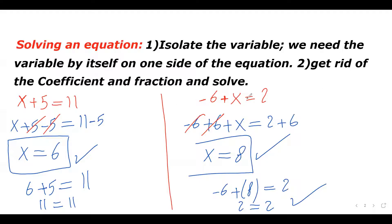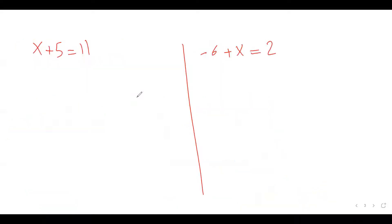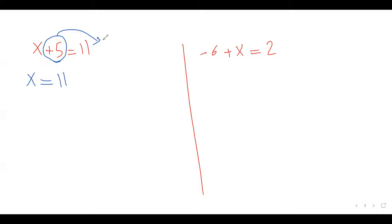There's another method which is a little faster. Whenever we move something from one side of the equation to the other side, we change the sign of that term. For x plus 5 equals 11: I move the positive 5 to the right side, it becomes negative 5. So x equals 11 minus 5, which is 6. That's the exact same answer using a different method.